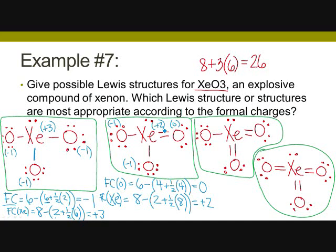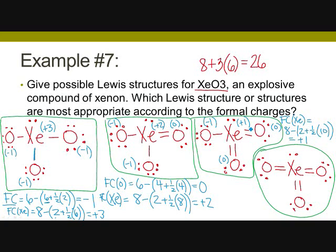In structure 3 with two double bonds: the one single bonded oxygen is still negative one, and both double bonded oxygens have a formal charge of zero. For xenon: eight minus two plus one half times ten bonded electrons gives five plus two equals seven assigned, so eight minus seven is plus one. Better, but can we do even better with structure 4 where all oxygens are double bonded?